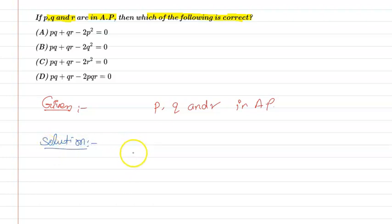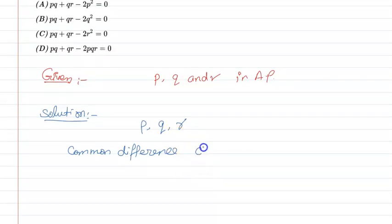So, if we have a common difference, we will say that P, Q, R are in AP. So, if we have common difference, we will say that D. So, here we have common difference Q minus P. This is P and Q.